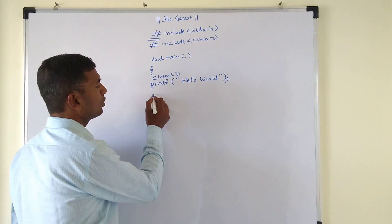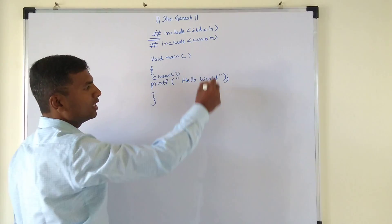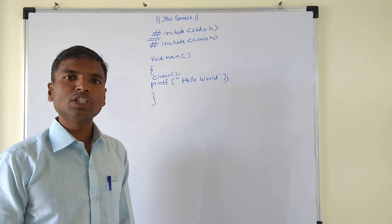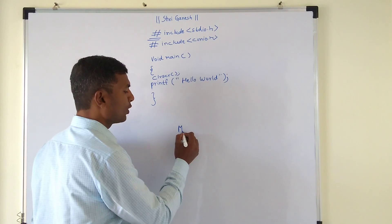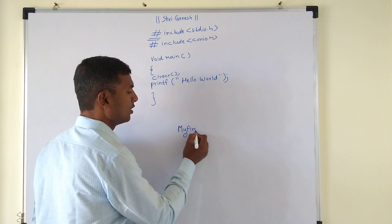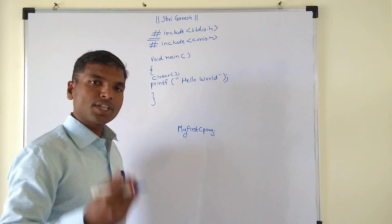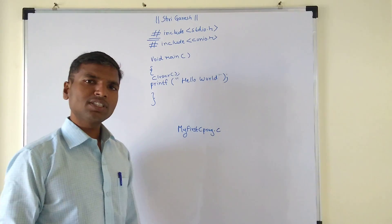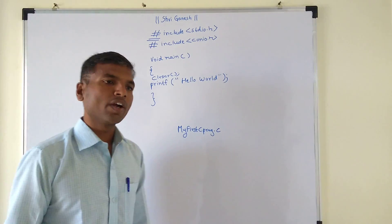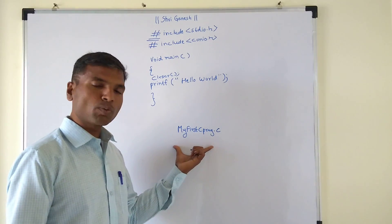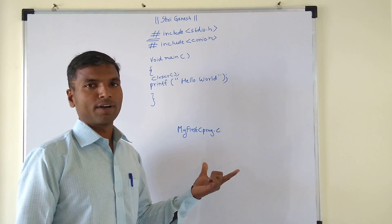Once you are done writing the program, you close the main function. Then you save the program with a name of your choice, but we will use 'MyFirstCProgram'. The extension of a C program file is always .c — if you were using C++, you would use .cpp, but for C we use .c. Save this file in the Turbo C bin folder.